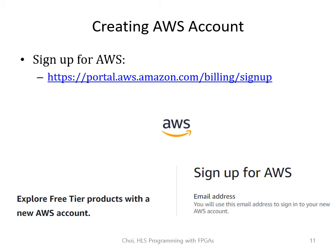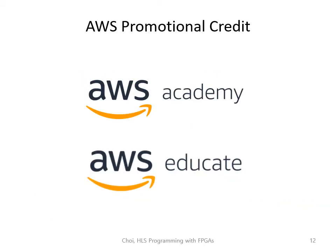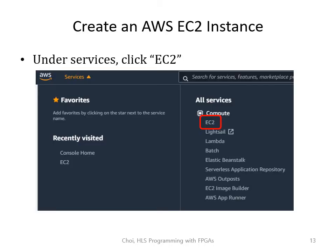Let's see how to create an AWS instance and how to log in. For those of you who are familiar with this process, you may want to skip the video to the next part. Starting from this slide, I'm going to assume that you have never used AWS before. First, you want to sign up for AWS and create an AWS account. Go to this link and follow the steps they ask you to do. Depending on the institution you're in, it's possible that you're eligible for promotional credit on sign up. Check with your IT administrator if you're able to obtain this, but keep in mind that some credits have limitations and cannot be used to access an F1 instance. After signing up, let's create an instance. Under services, click on EC2.